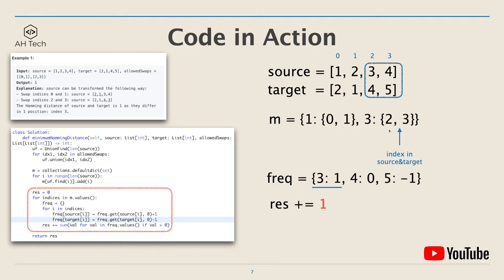In the next group — indices two and three — there is one element, three, that appears in the source array but not in the target array. The frequency hash map reflects this, and we add one to result. We can think of this as: we're able to swap three and four in the source array, leaving one position different between source and target. So the Hamming distance becomes one, and the final output for this example is one.